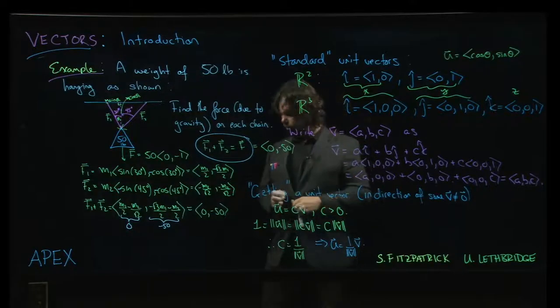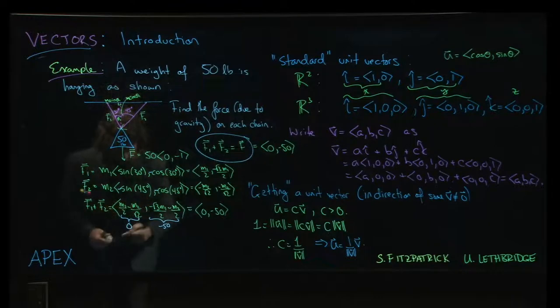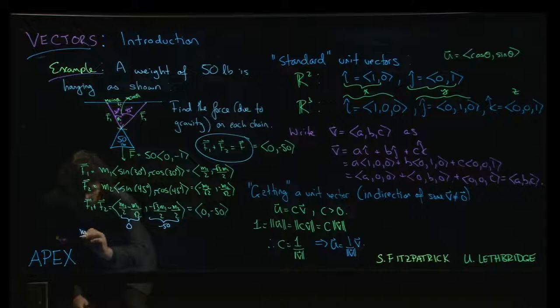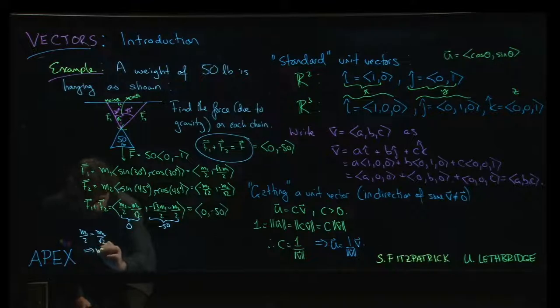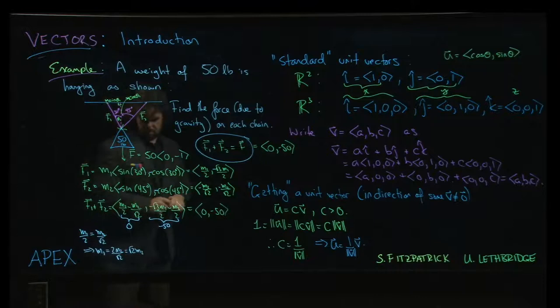So that gives us a pair of equations, two variables, two equations. That's enough for us to solve, right? So from the first one, I think we can say, well, okay, so that has to equal 0. So in other words, M1 over 2 has to equal M2 over root 2. So M1 would be 2M2 over root 2, which is root 2 times M2. Okay,